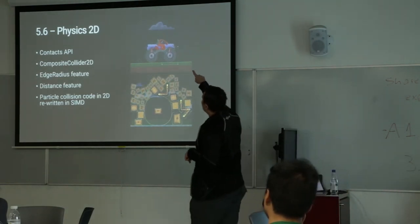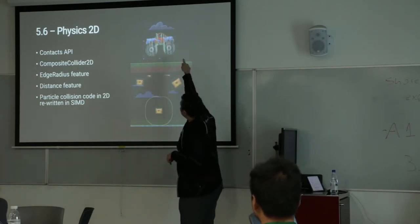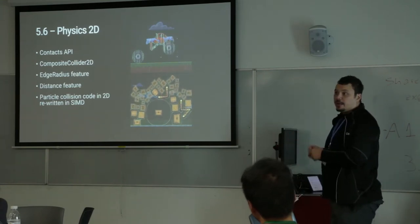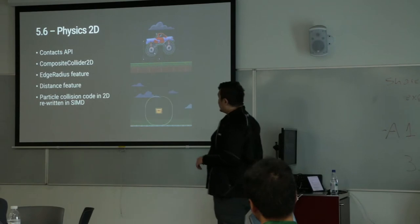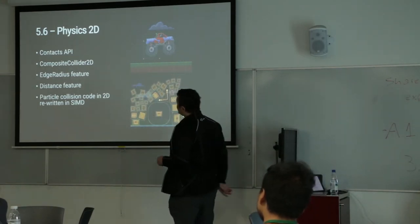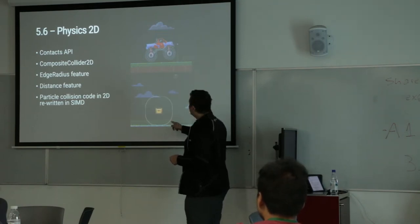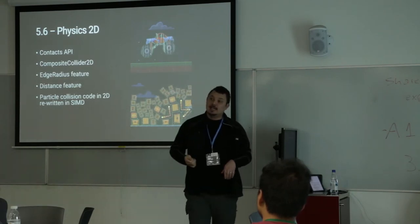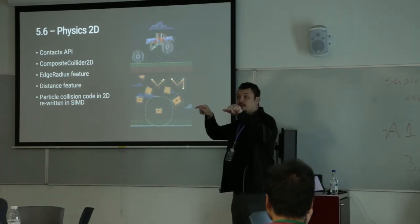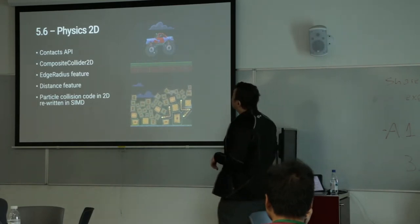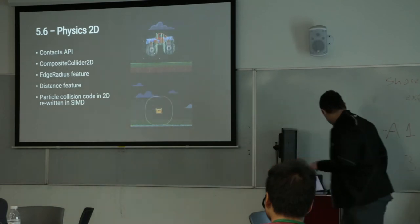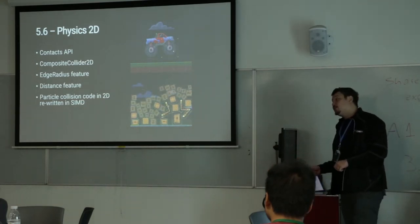We also added composite colliders. You can have some polygon colliders on the wheels and body of a track, and when you put them together and add a composite collider, we merge the whole thing, which simplifies the collision shape. We added an edge radius and distance feature that lets you push out the collision radius of edges — useful when the collision doesn't necessarily match the visuals, or when you want rounded corners without defining weird collision shapes. Distance gives you the closest distance between any two colliders. All the tile collision code in 2D was rewritten in SIMD, giving a really nice performance boost.